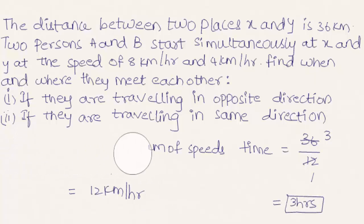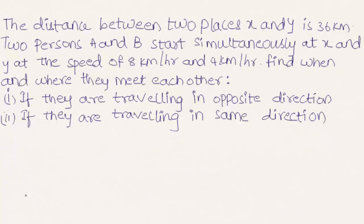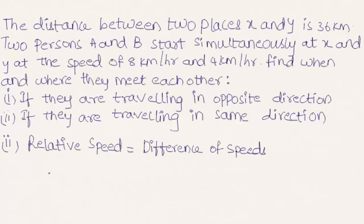For the same direction case: the relative speed when traveling in the same direction is the difference of the speeds. The speeds of A and B are 8 kilometers per hour and 4 kilometers per hour, so subtracting gives a relative speed of 4 kilometers per hour.